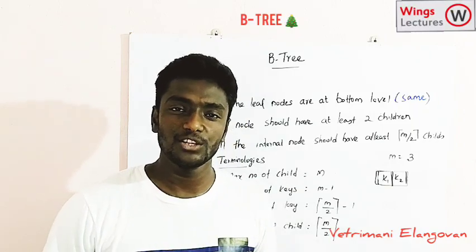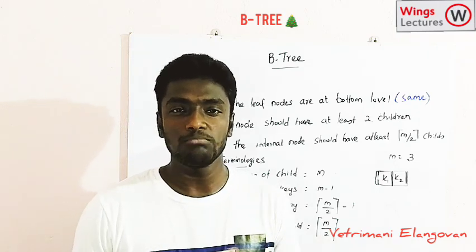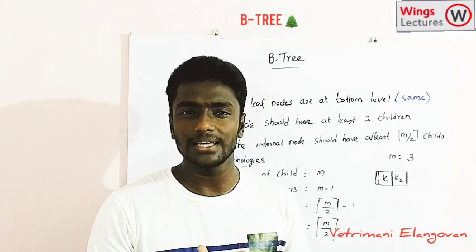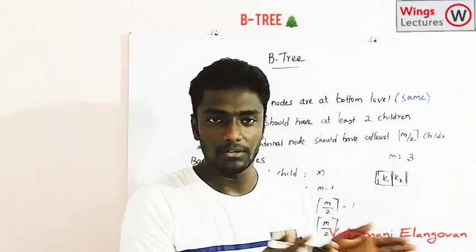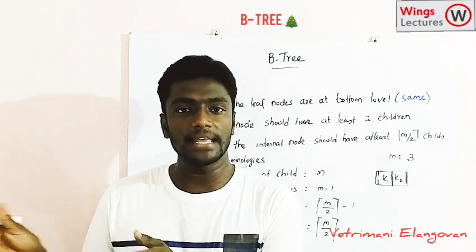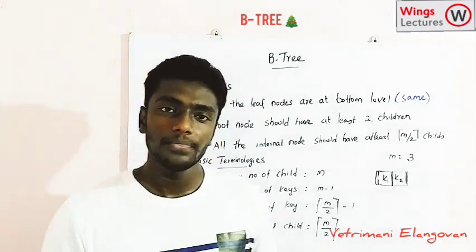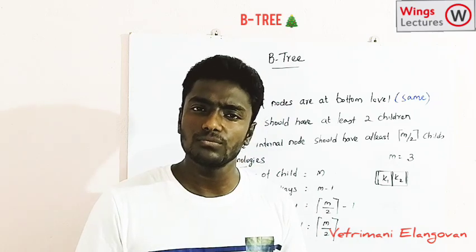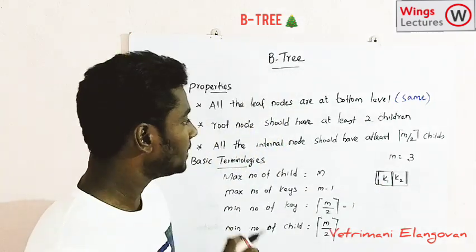Hi dear students, this is a B-tree tutorial. B-tree is a kind of binary search tree, also called a multi-way search tree. It follows the basic rules: if a value is less than the root, it goes to the left subtree, and if greater, it goes to the right subtree. Now let's look at the additional properties B-tree has compared to AVL tree and why we use B-tree instead of other tree data structures.